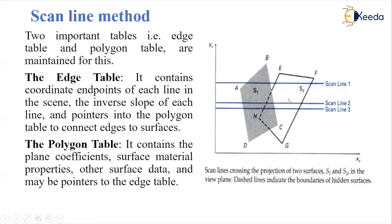Surface S2 has a hidden boundary. The scanlines cross the projection of surfaces S1 and S2, passing through both surfaces in the view plane.